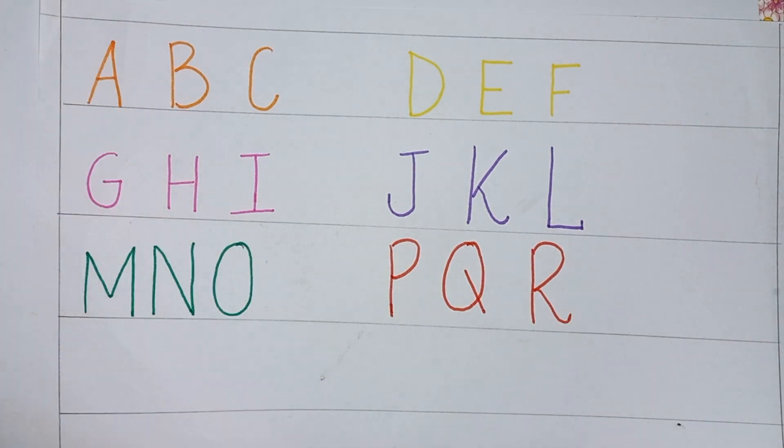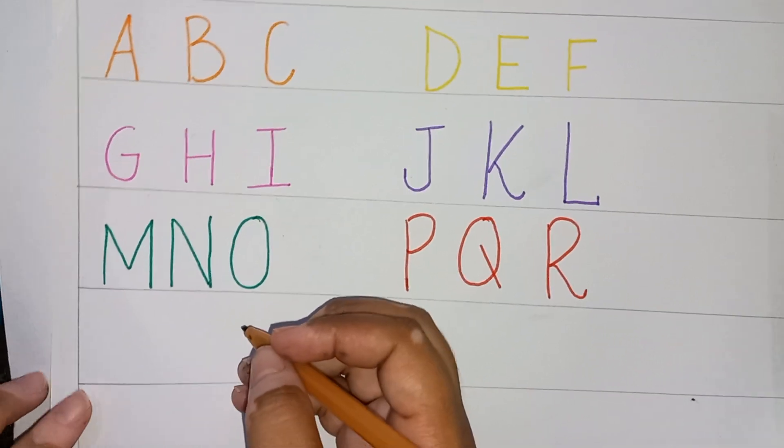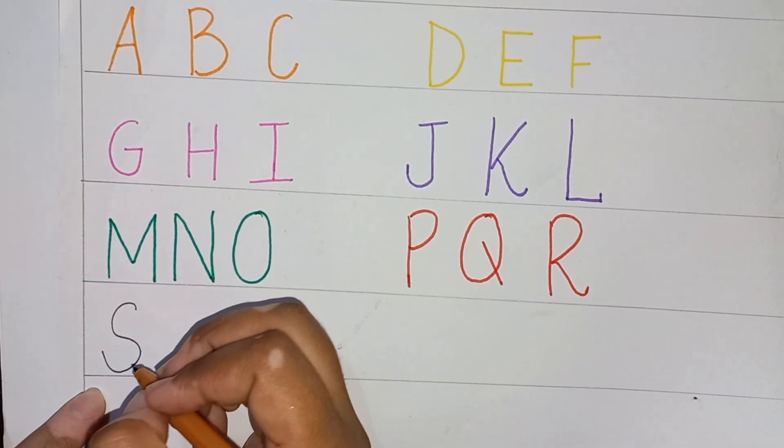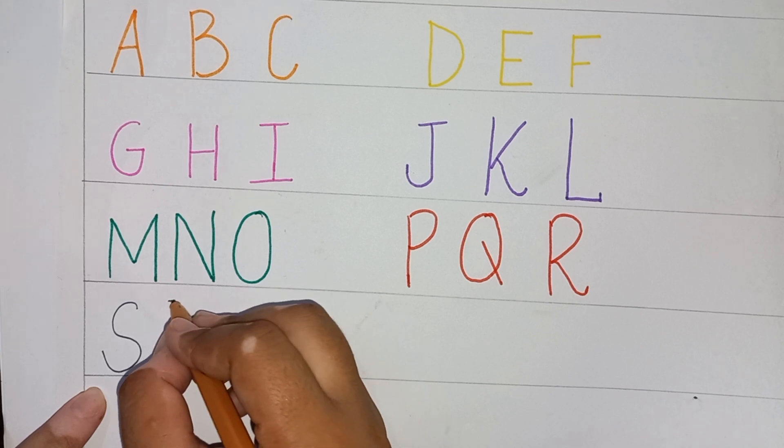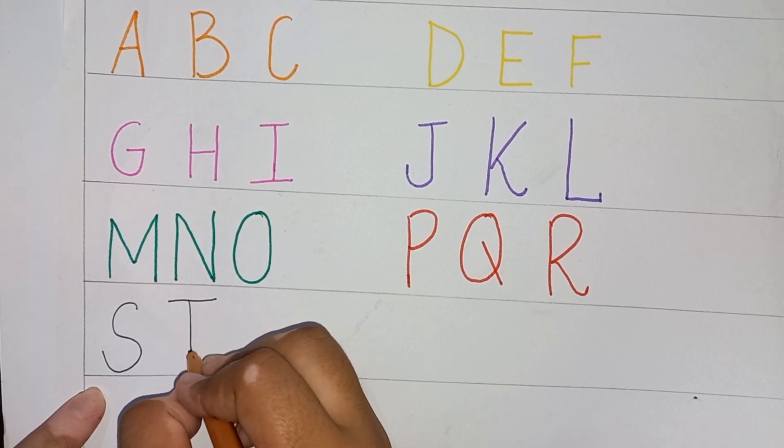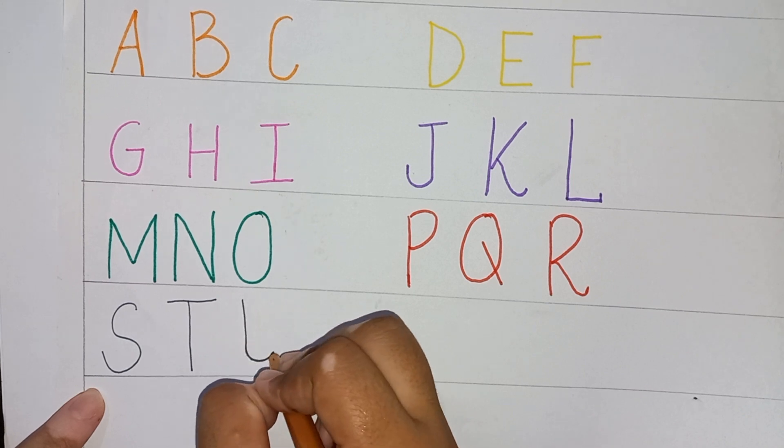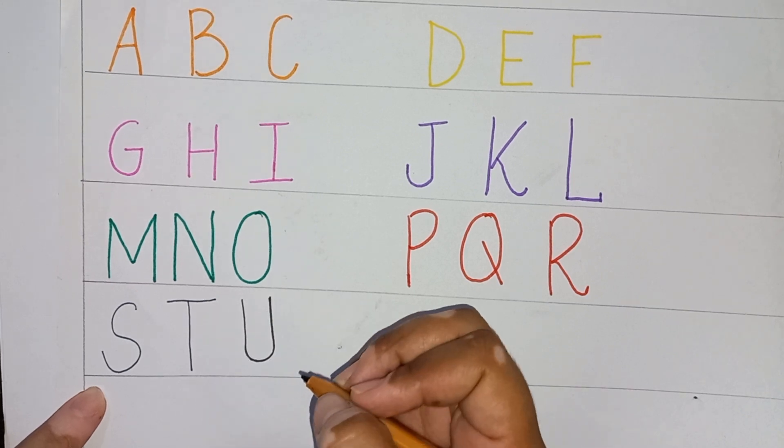S, S for sun. T, T for tree. U, U for umbrella.